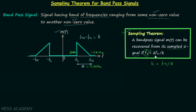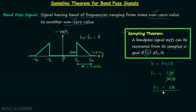If FS is less than 2·FH/K, then we cannot recover the band-pass signal from the sampled signal. Substituting K equals FH divided by B into FS equals 2·FH/K, the FH terms cancel, and we get FS equals 2 times bandwidth B. You can solve questions directly using this simplified result. The derivation is not required in this course.